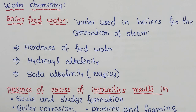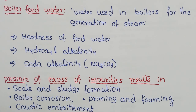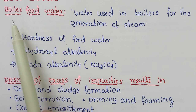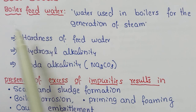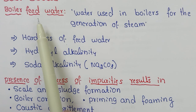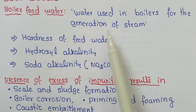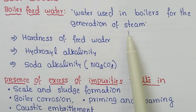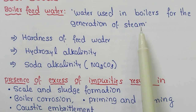Welcome to the video lecture on water chemistry. In the previous session we covered the sources of water and the types of impurities present in water. In this video, let us discuss boiler feed water and boiler corrosion. A boiler is a device or setup used in industries mainly to heat water or to produce steam. The water which is fed into the boiler is called boiler feed water — water used in boilers for the generation of steam, which is used as a power source to run industrial units.